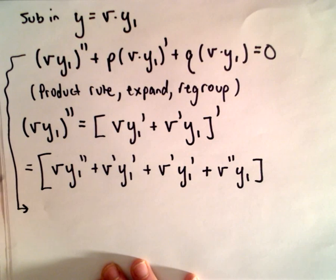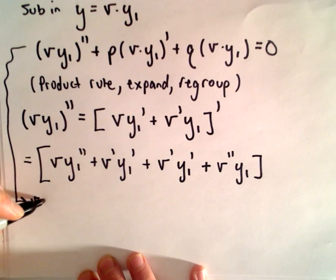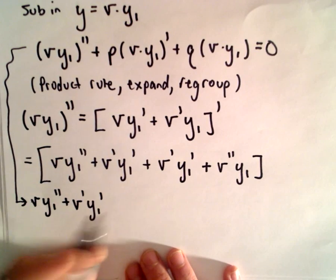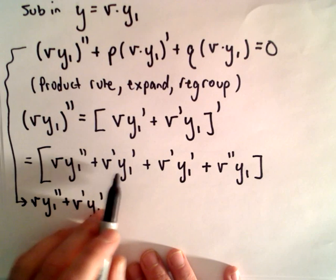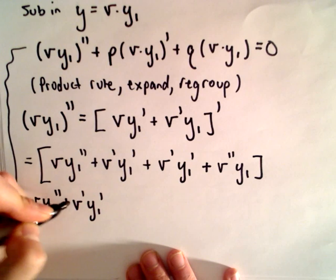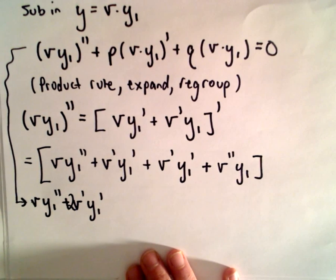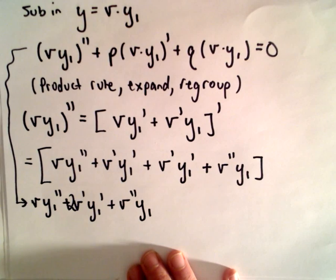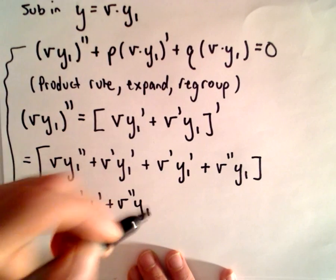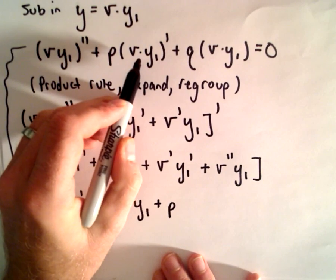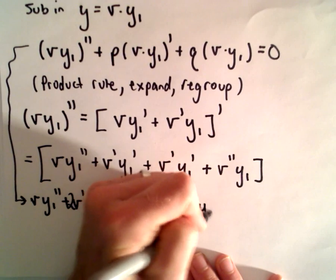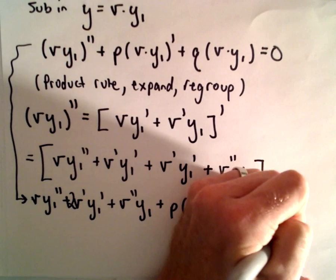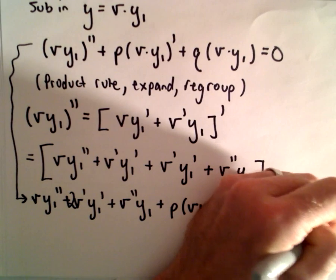So if we expand this out, we have v times y sub one double prime, plus two times v prime times y sub one prime, plus v double prime times y sub one, plus p times the quantity v times y sub one prime plus v prime times y sub one, plus q times v times y sub one, and that equals zero.